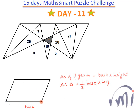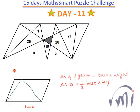In both triangles, the base and height are the same. As long as the length of the base and the height remain the same, all triangles with that same base and height will have the same area. So the area of one triangle will be equal to the area of the other — each equal to half the area of the parallelogram.